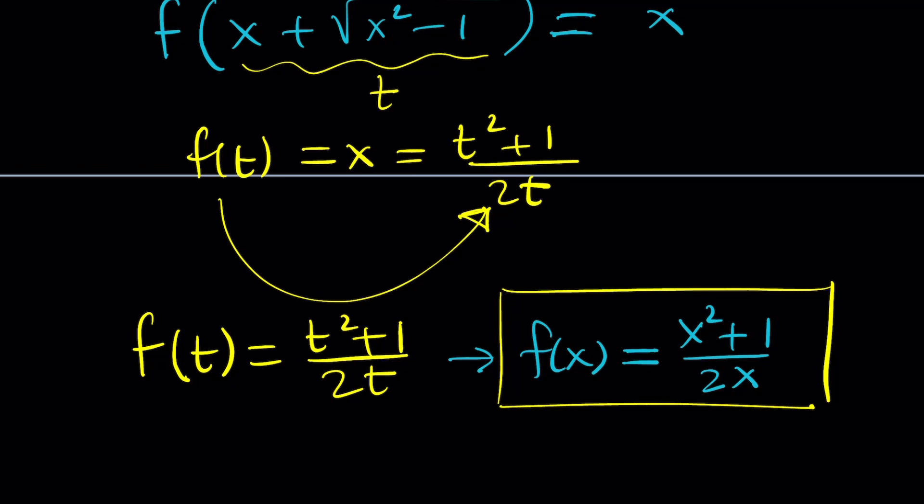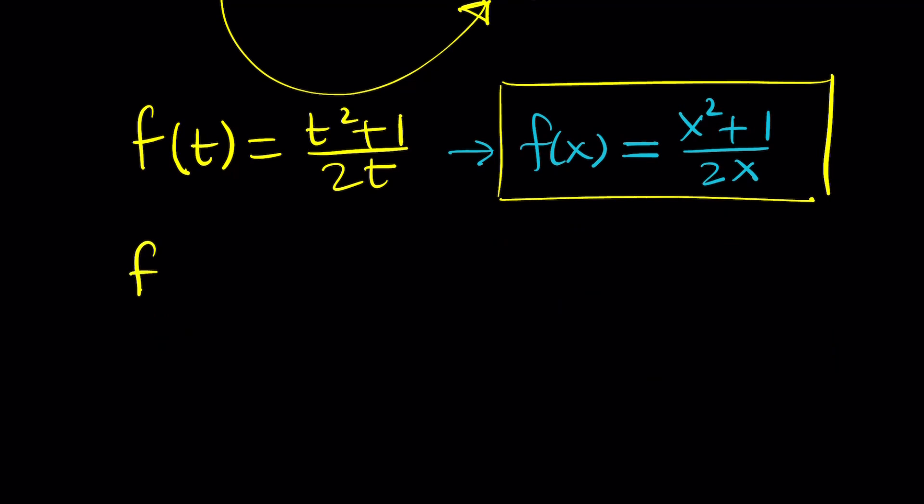But one of the things before I get into that is to check a particular value. So in my original equation, which was f of x plus the square root of x squared minus 1 equals x, I'd like to replace x with 1. Why? Because it's going to disappear. This is going to be a 0. So I'm going to get f of 1 plus 0, which is f of 1, equals 1.